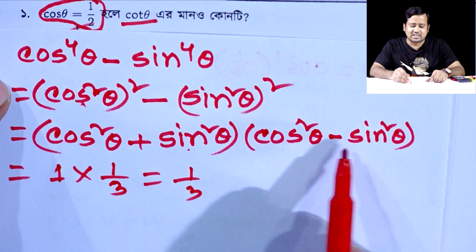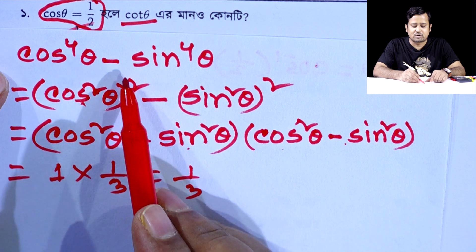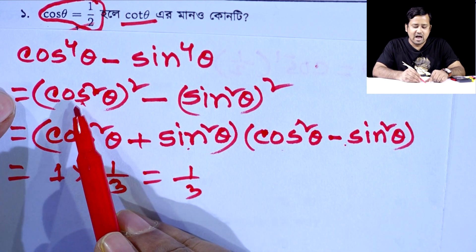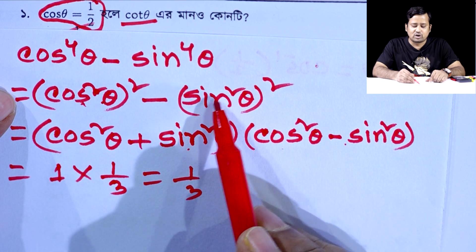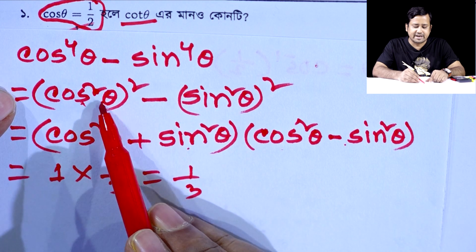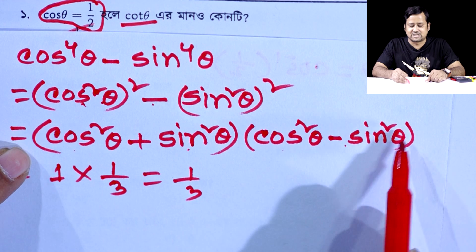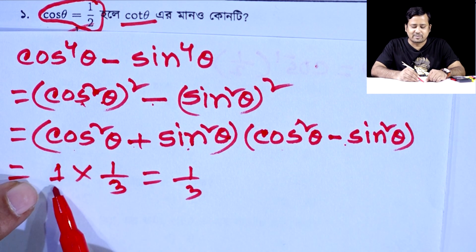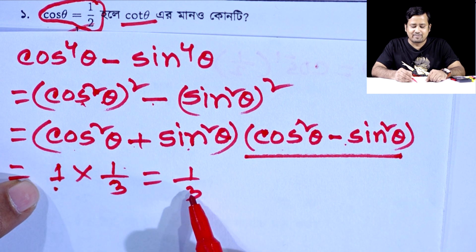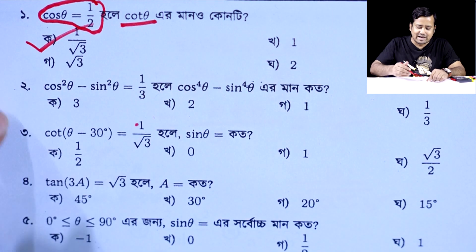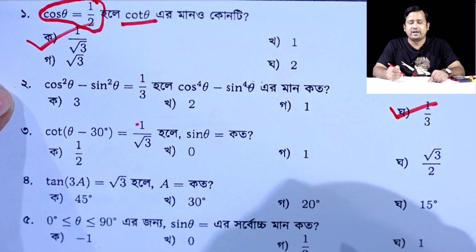We have cos theta minus sin theta equals 1 by 3. Using the identity a squared minus b squared equals (a plus b) into (a minus b), and sin squared theta plus cos squared theta equals 1, we get: 1 times (cos theta minus sin theta) equals 1 by 3. Therefore cos theta minus sin theta equals 1 by 3, and the difference is 1 by 3. The answer simplifies to 0.